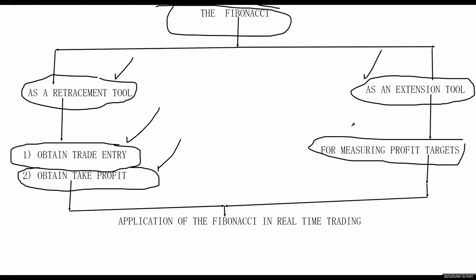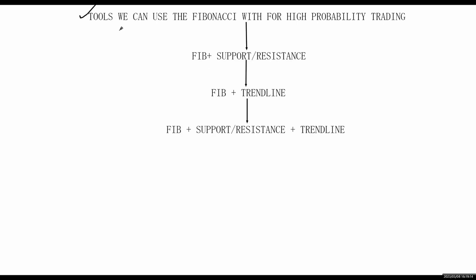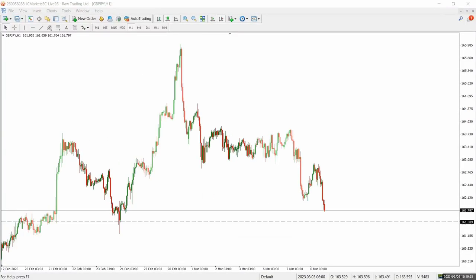The next thing I want to touch on is the tools we can use the Fibonacci with. The first one is Fib plus support and resistance. In the market, your goal is to find confluences upon confluences that give you high probability trades. I go for quality trades, not every trade. I focus on one pair — the GJ. Let's go to the live chart and talk about how to use the Fibonacci with support and resistance to obtain a high probability trade.